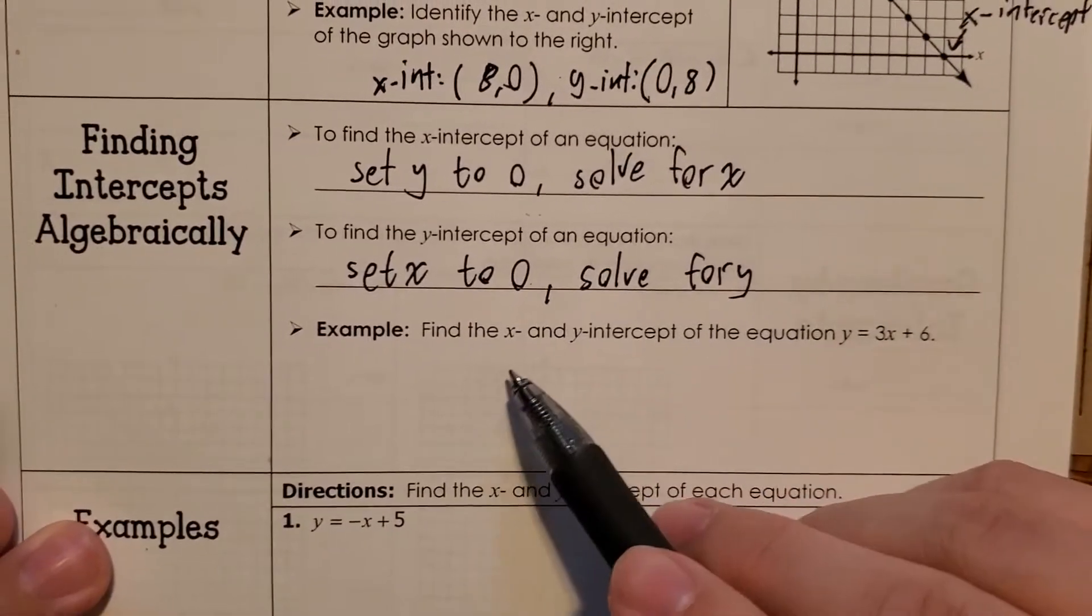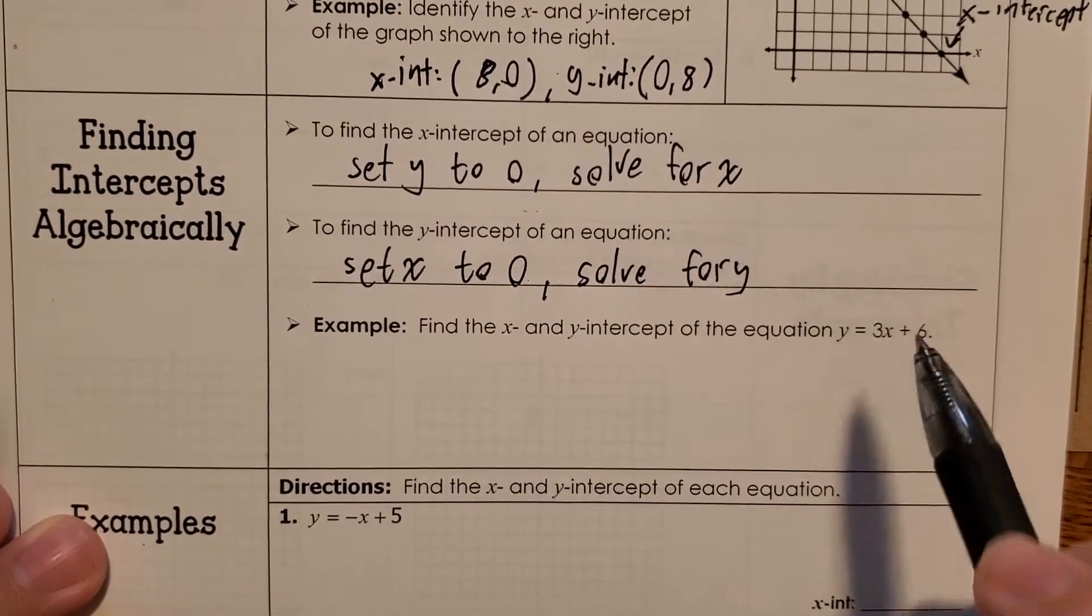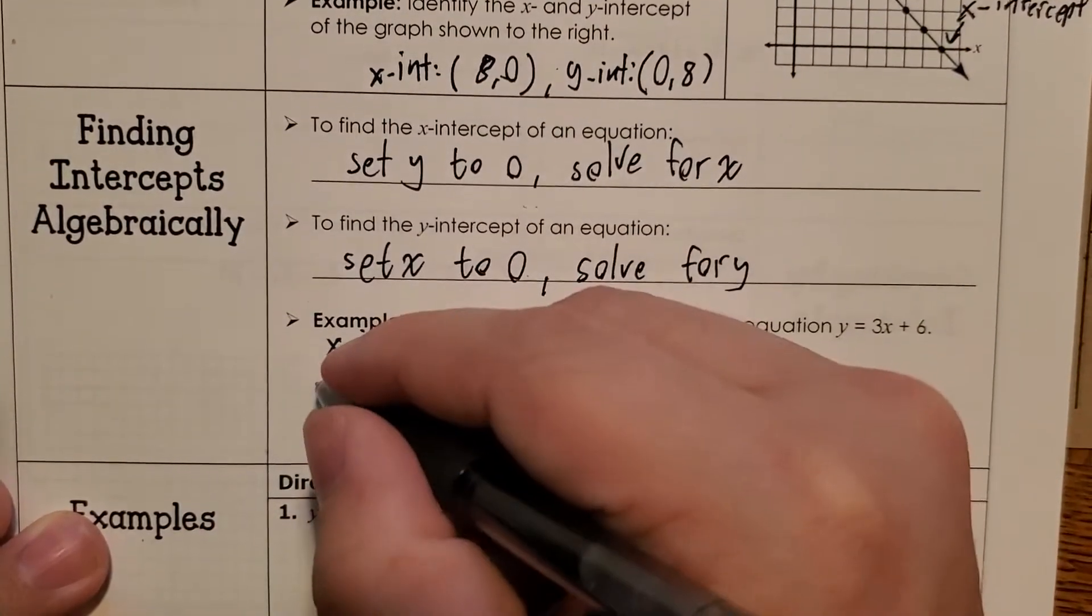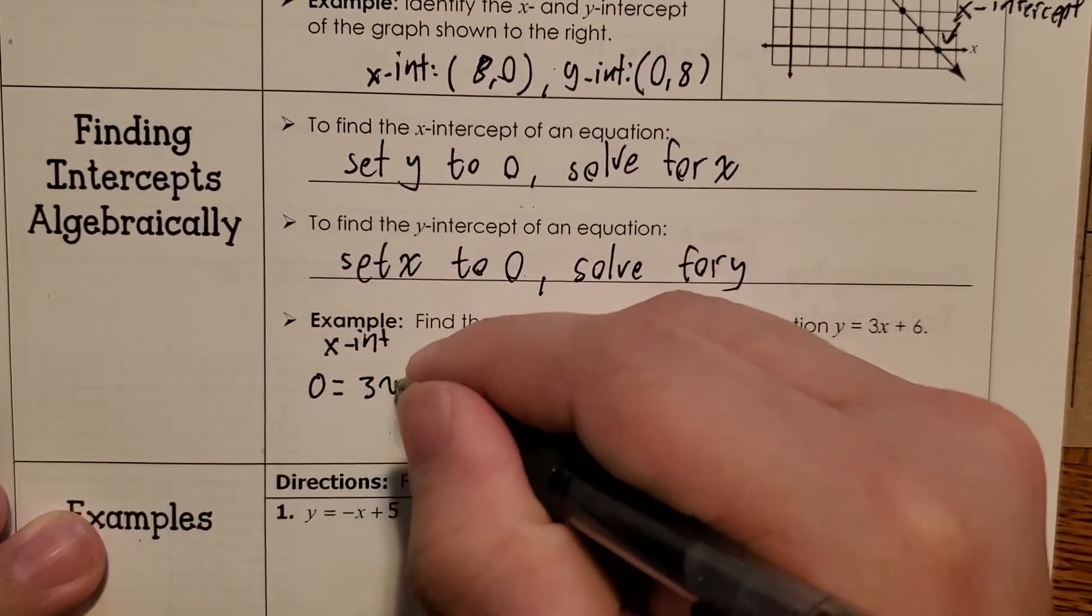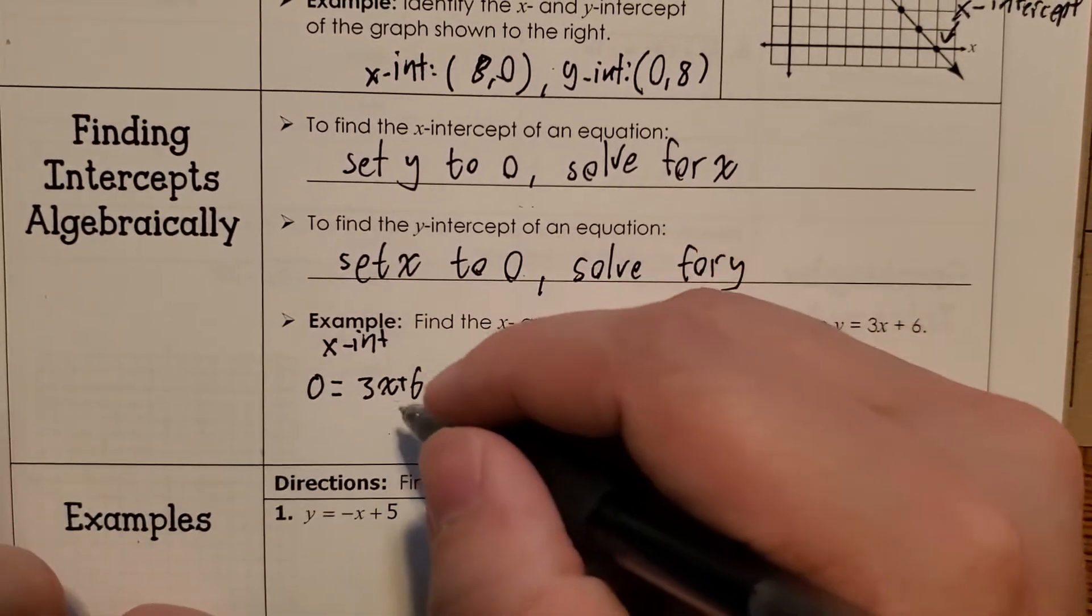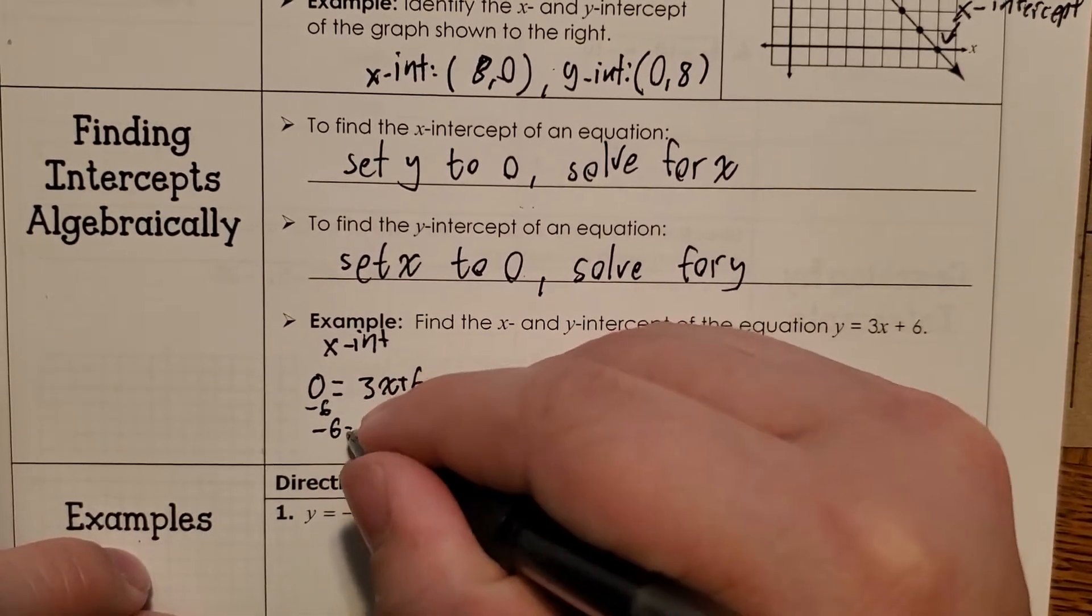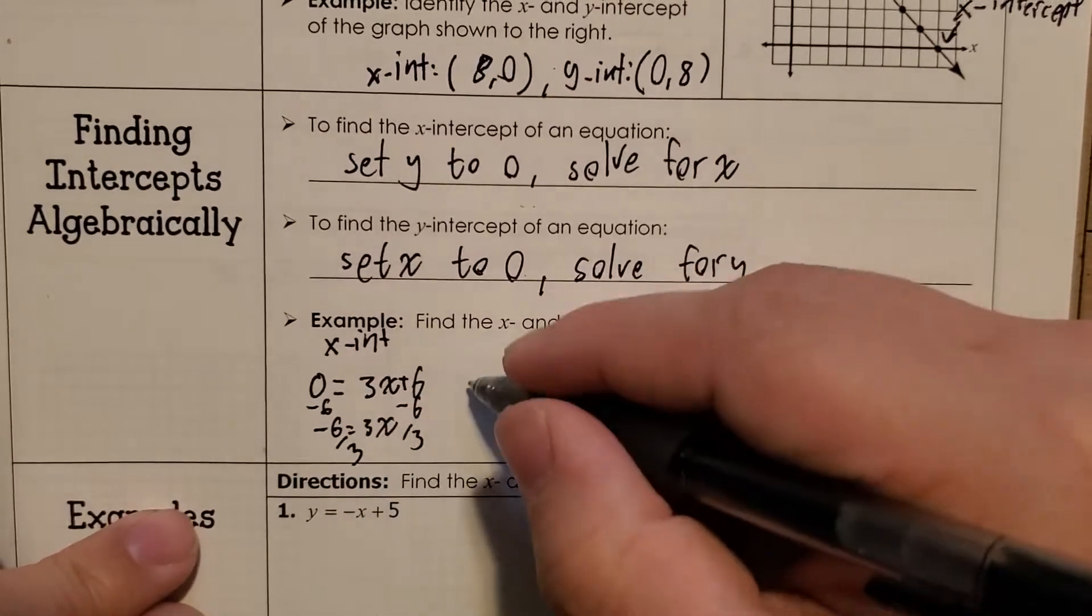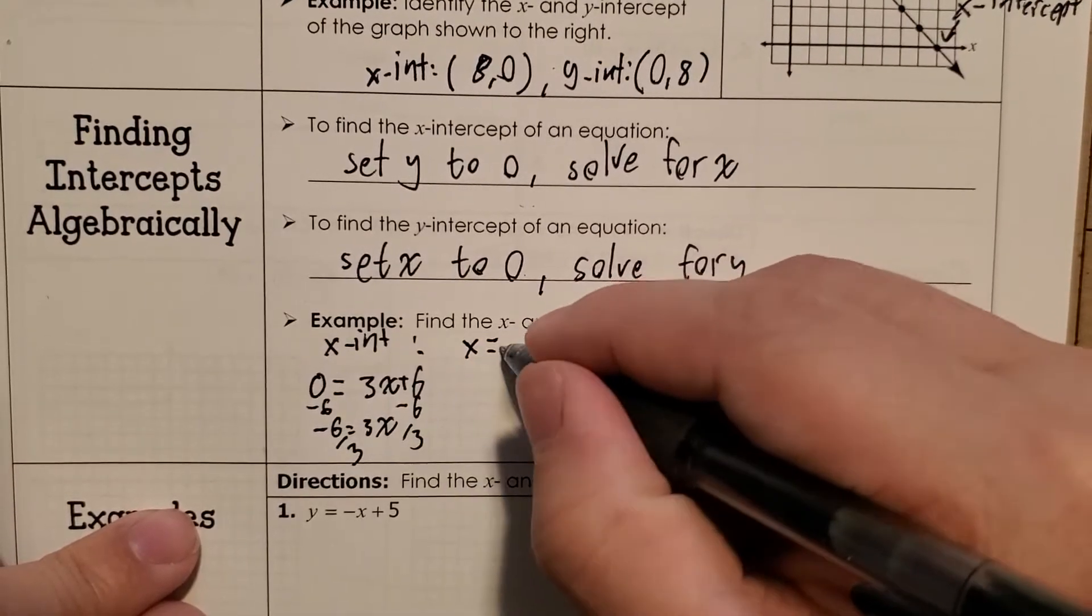So here's a nice example. We need to find the x and y-intercepts for y equals 3x plus 6. So if I want to find the x-intercept, I am going to set y to 0. So 0 equals 3x plus 6. And then it's just a two-step linear equation. So we subtract 6 on both sides, and then divide by 3. And we get an x-intercept at x equals negative 2.